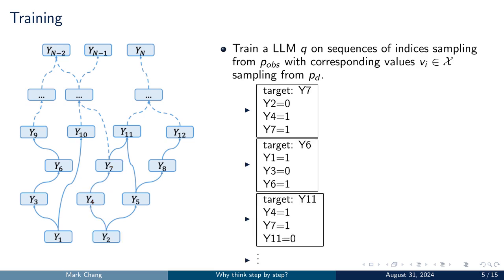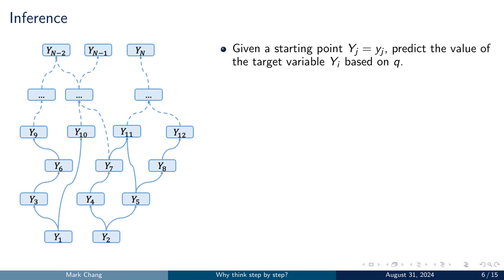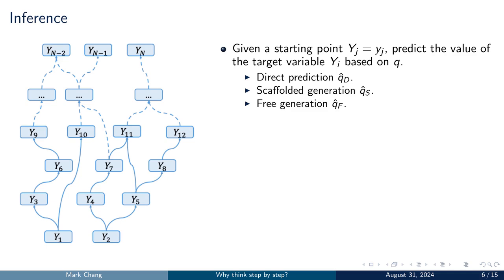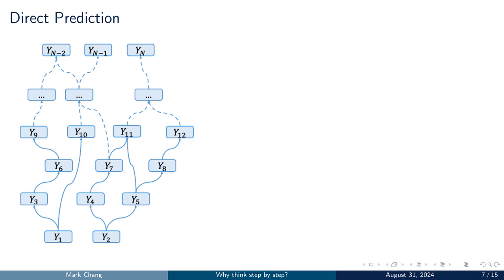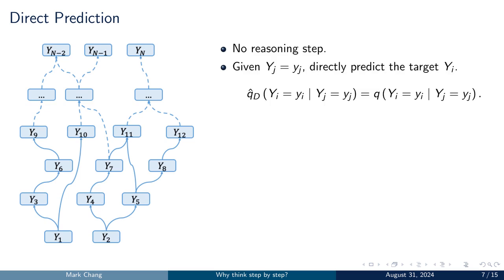During inference, the model q is given an observed variable y-j and its corresponding value, and must predict the value of the target variable y-i. There are three methods by which the model can predict the value of y-i. The first method is direct prediction, denoted by hat q-d. In this method, no reasoning steps are involved. Given an observed variable y-j with a known value, the model directly predicts the value of the target variable y-i. The direct prediction hat q-d is obtained by conditioning the model q on the observed variable y-j and its corresponding value.